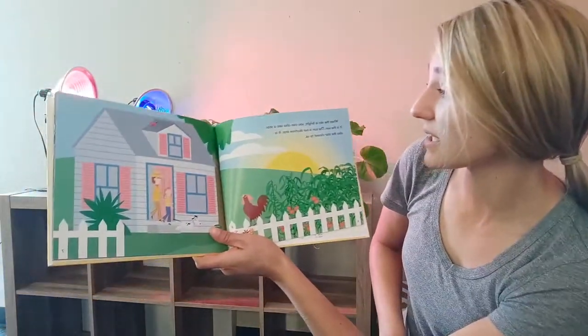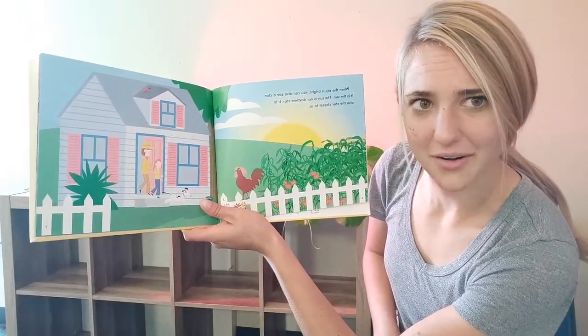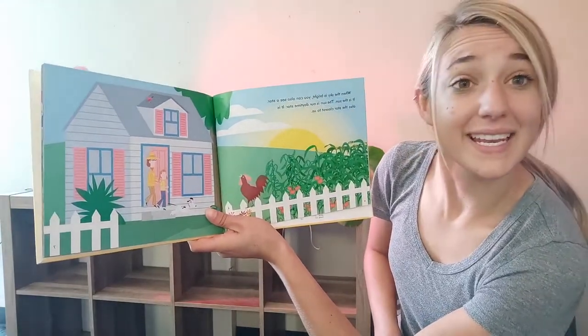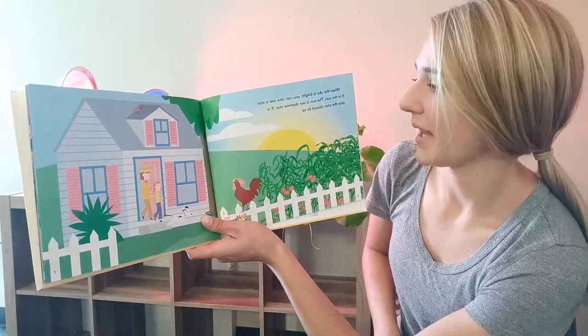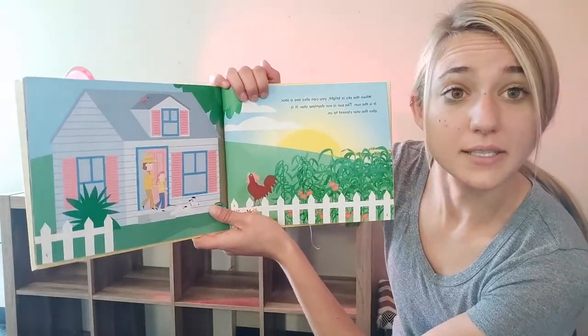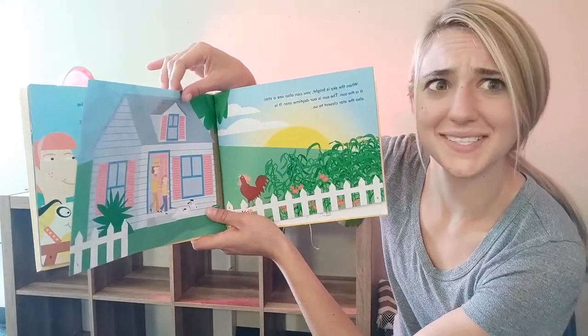When the sky is bright, you can also see a star. What? It is the sun. The sun is our daytime star. It is also the closest star to us. The sun is a star.